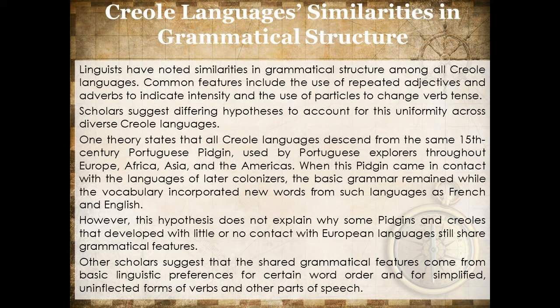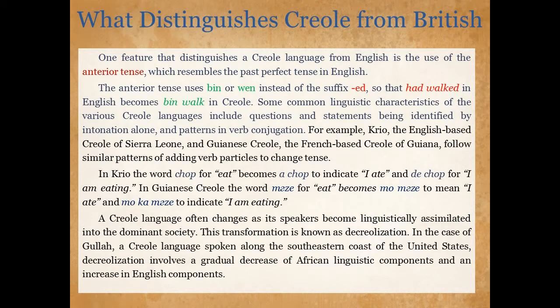Other scholars suggest that the shared grammatical features come from basic linguistic preferences for certain word order and for simplified, uninflected forms of verbs and other parts of speech. One feature that distinguishes a creole language from English is the use of the anterior tense, which resembles the past perfect tense in English. The anterior tense uses 'been' or 'bin' instead of the suffix '-ed,' so that 'it walked' in English becomes 'bin walk' in creole. Some common linguistic characteristics include questions and statements identified by intonation alone, and patterns in verb conjugation.